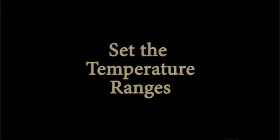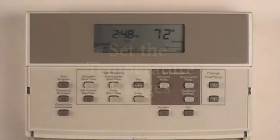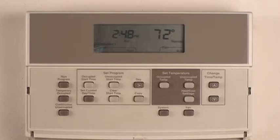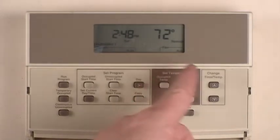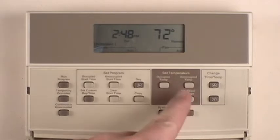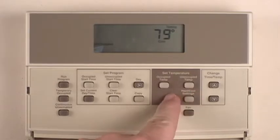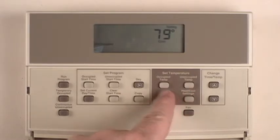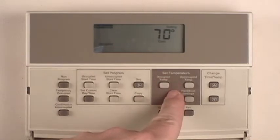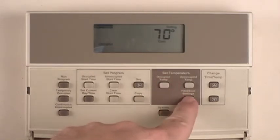After setting the current day and time and programming the occupied and unoccupied periods, we need to set the desired temperature ranges. Press the Heat/Cool Settings button to enter the mode for setting cooling system temperatures. Pressing it again changes the mode to set temperatures for the heating system.